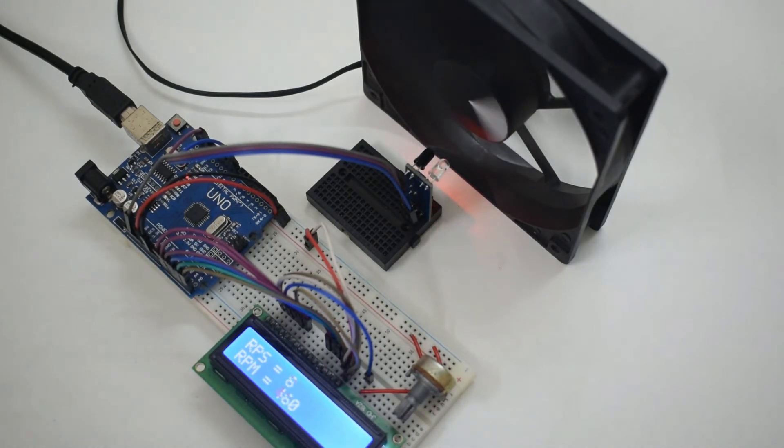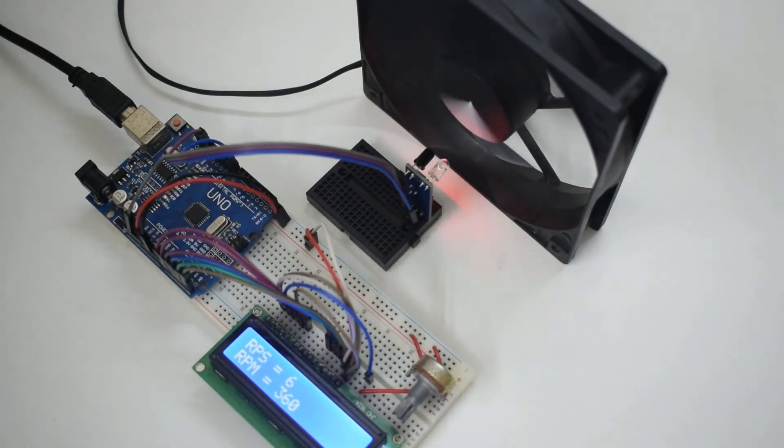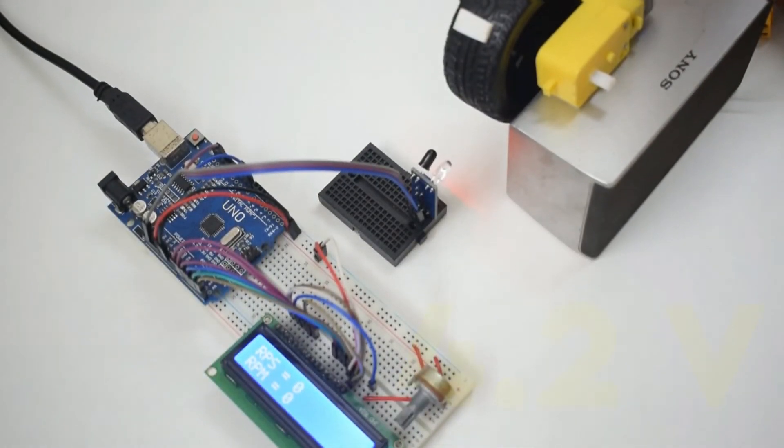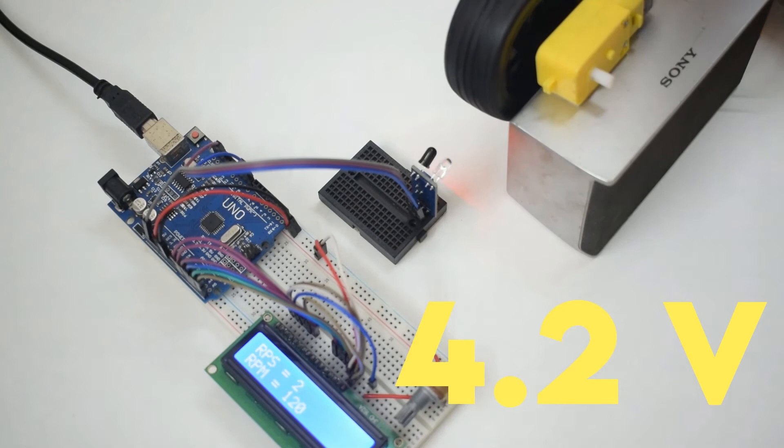And by cross-checking with the speed of the cabinet cooling fans at different voltages, the tachometer seems to be providing pretty accurate measurements. This motor is rated 300 RPM at 12V DC and I'll let the results speak for themselves.